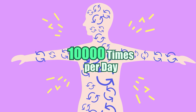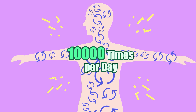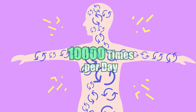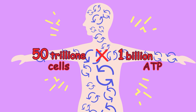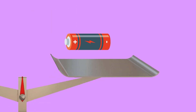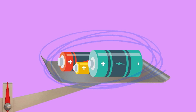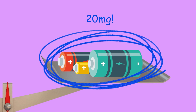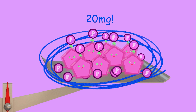These ATP-ADP cycles allow life to continue receiving energy. In humans, these ATP cycles occur about 10,000 times per day. Our body is made up of about 50 trillion cells, and there are about 1 billion ATP batteries in one cell. The total amount of ATP in our bodies weighs less than 20 grams, but this efficient ATP battery gives our cells all the energy we need.